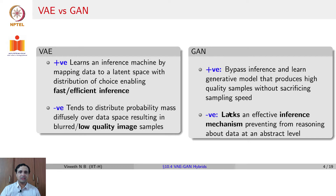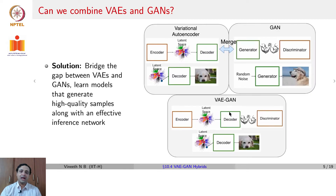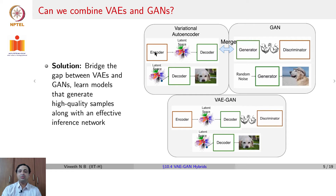Whereas with a VAE, that procedure is implicit in its design. The question we now ask is: can we combine a VAE and a GAN to get high quality samples as well as an effective inference network to reason at the level of latent variables? For a VAE, at training time you have an encoder, a latent space, and a decoder; at test time you sample from the latent space. A GAN has a generator competing with a discriminator; at test time you provide random noise to the generator. We now explore whether these two pipelines can be combined.